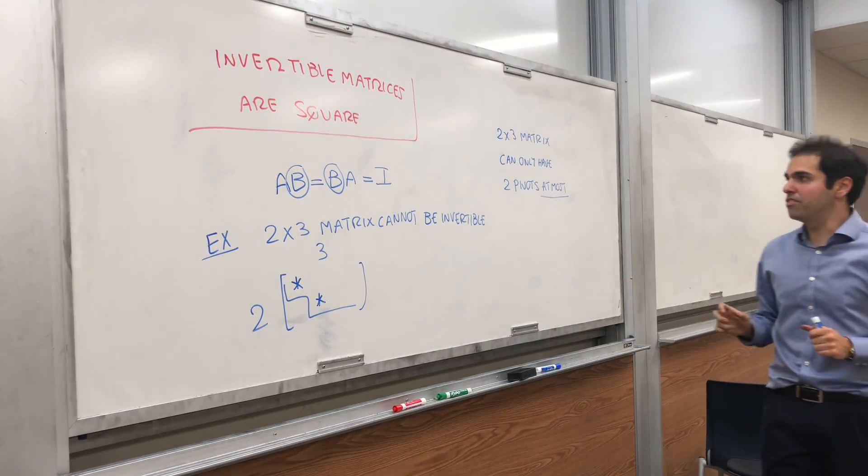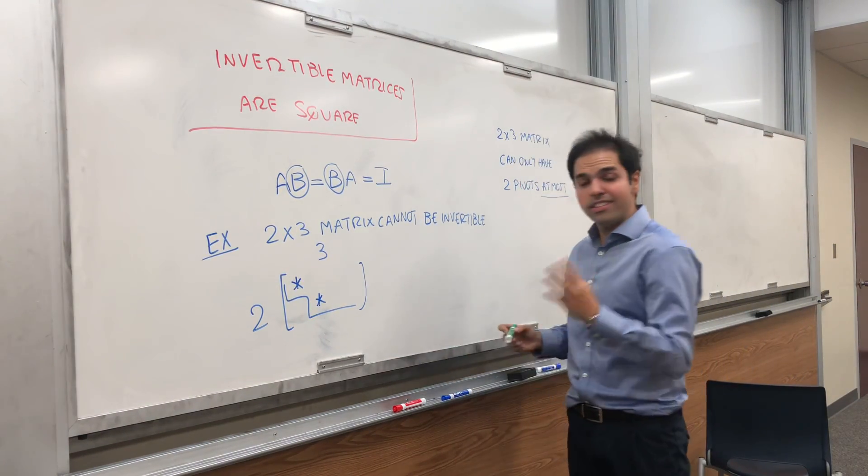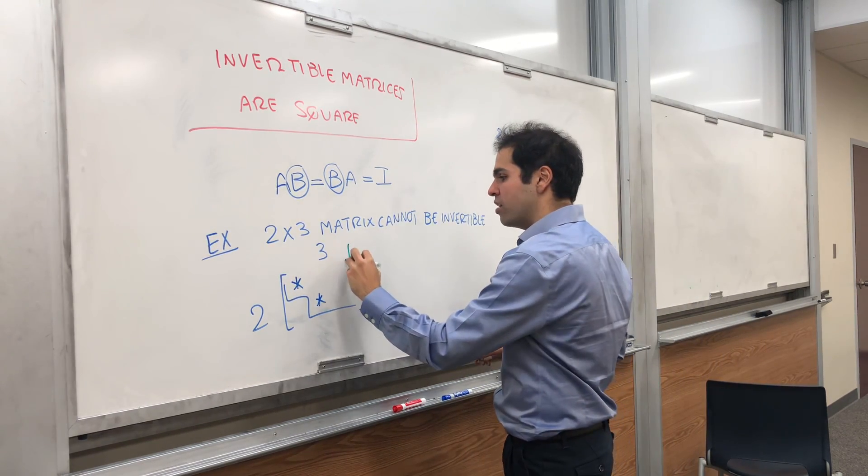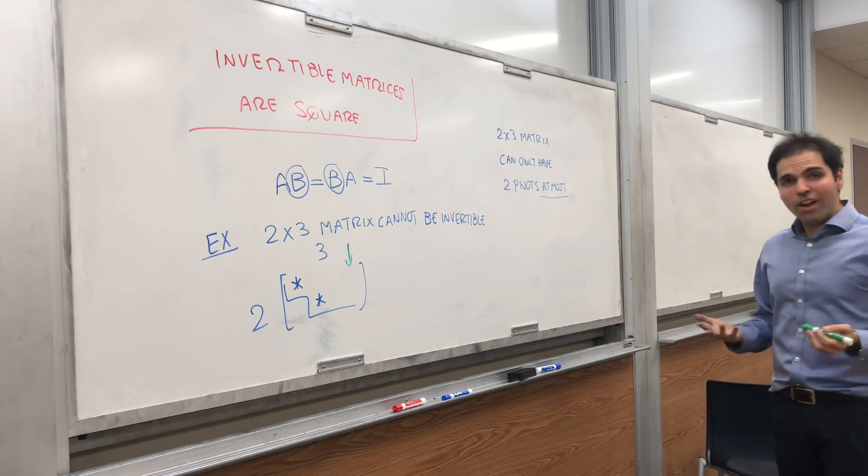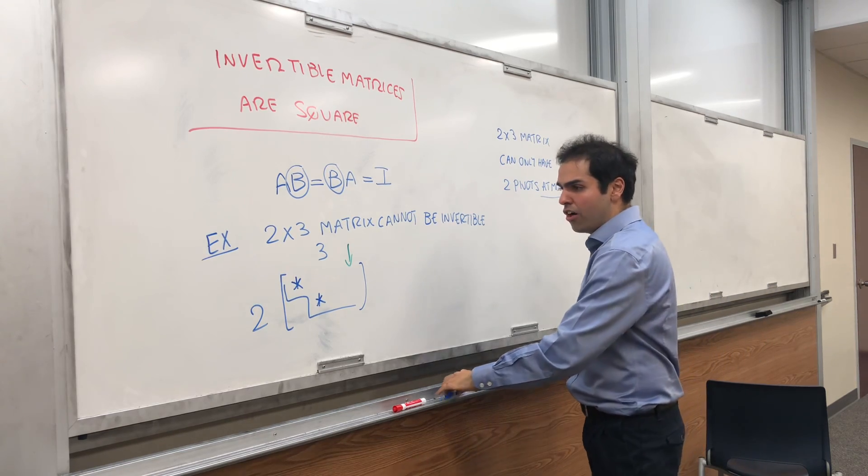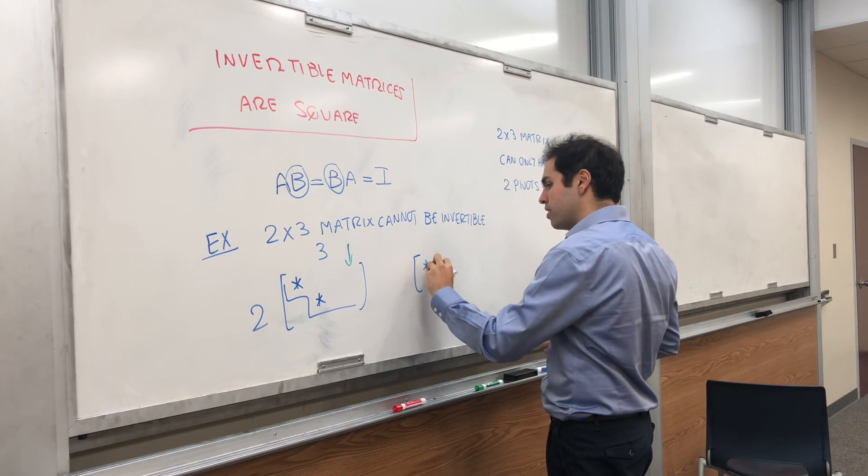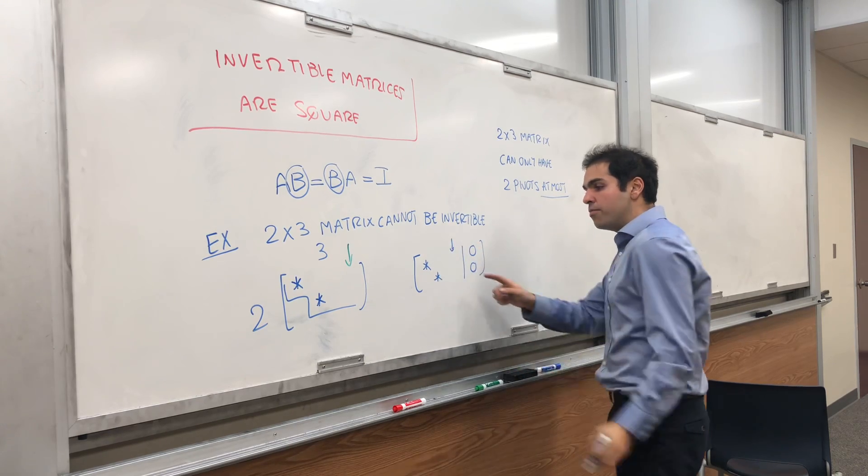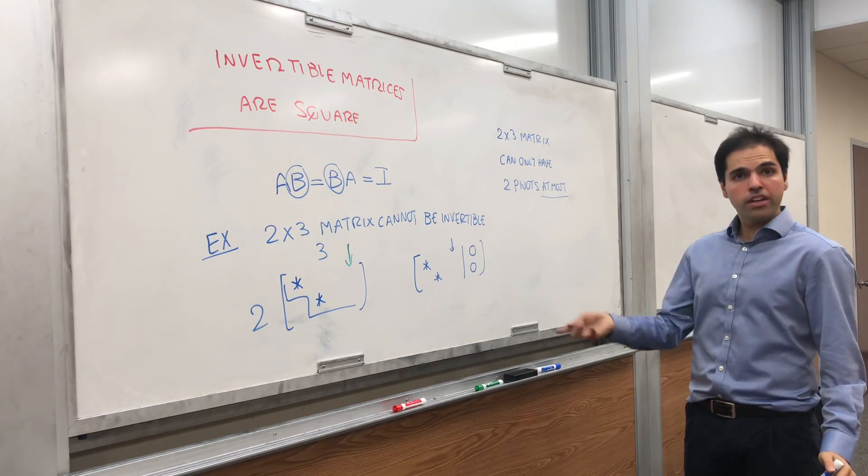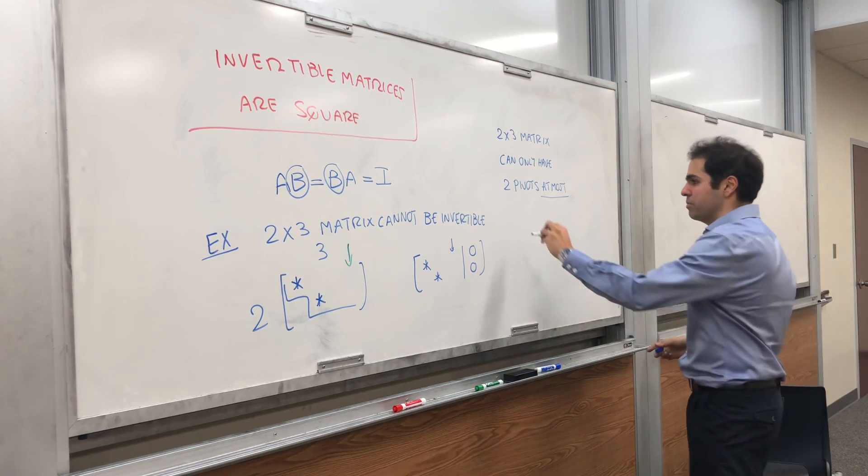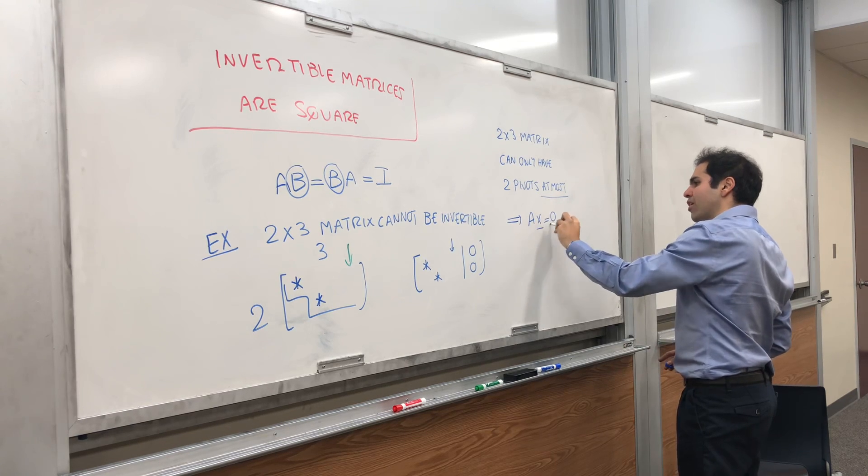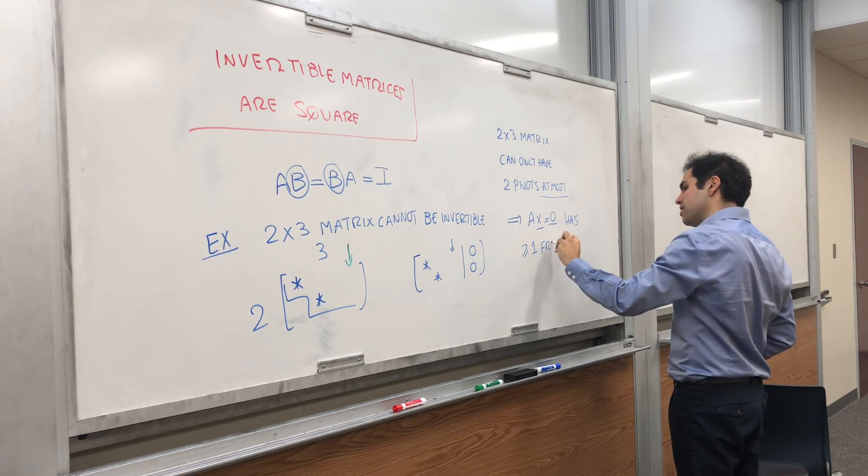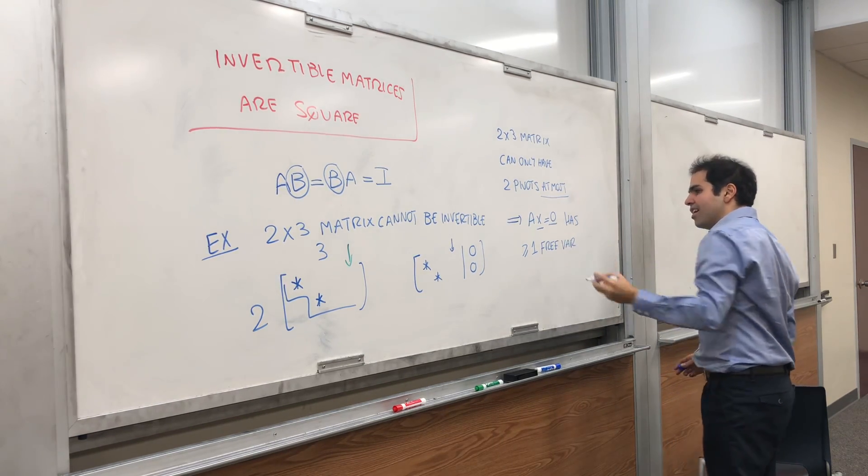Best case scenario, a 2 by 3 matrix can only have at most two pivots. In worst case scenario, it has no pivots, but it can never have three pivots, because the number of pivots has to be less than the number of columns and the number of rows. So it's less than the minimum of the two. In particular, since it has only at most two pivots, one of the columns has to be a non-pivot column. What does that mean?